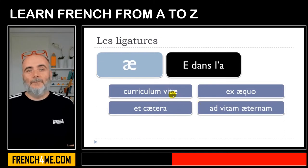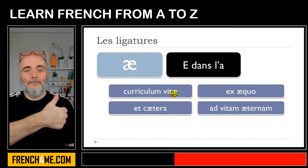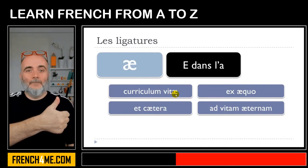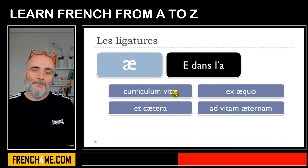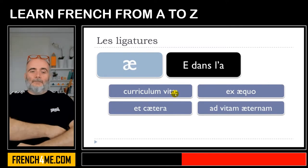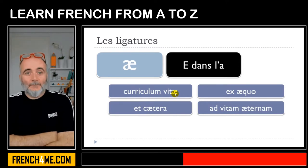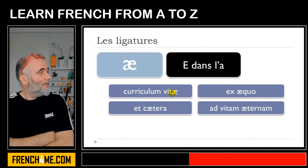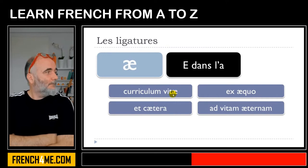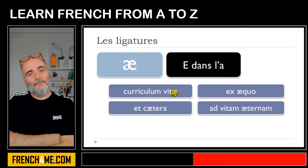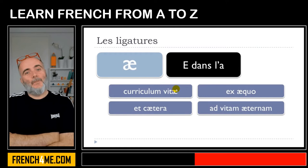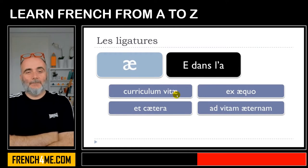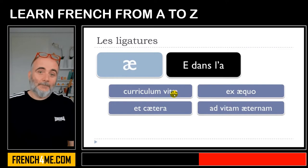It is rare, but it does exist, and it can be a challenge to write this letter correctly on your computer, because you have to go through Insert and then Symbol. So basically, if you want to write it correctly, you should put this E dans l'a. If you don't manage to insert it, just put A and then E — maybe your computer will correct it automatically.